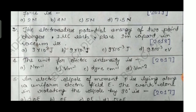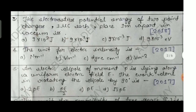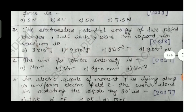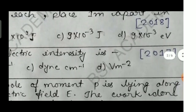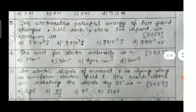Question number three: the electrostatic potential energy of two point charges, one microcoulomb each, placed one meter apart in vacuum is — option A: 9×10³ joule, option B: 9×10⁹ joule, option C: 9×10⁻³ joule, option D: 9×10⁻³ electron volt. This was asked in 2018. Note that energy can also be expressed in electron volt, which is an important observation here.